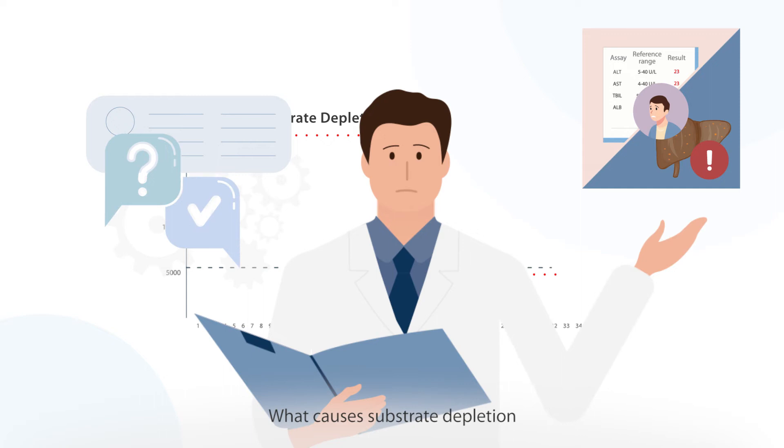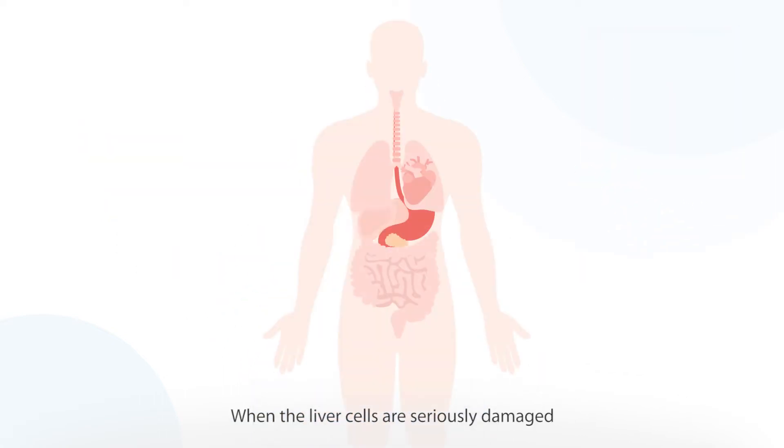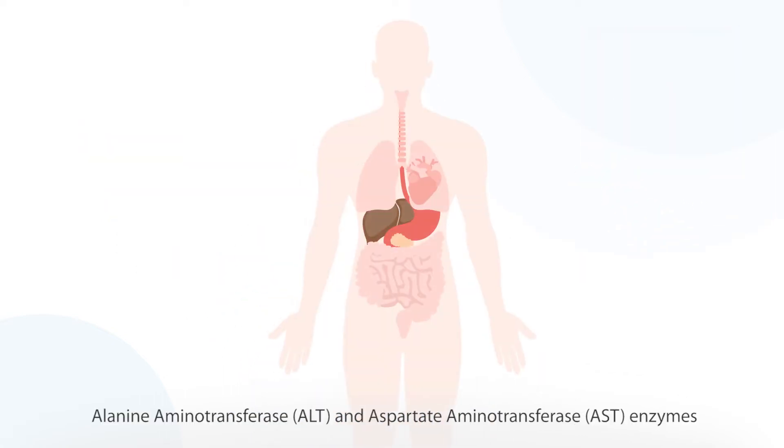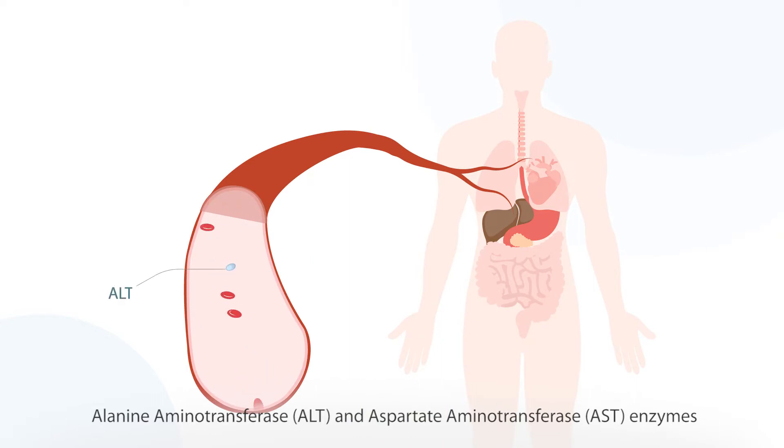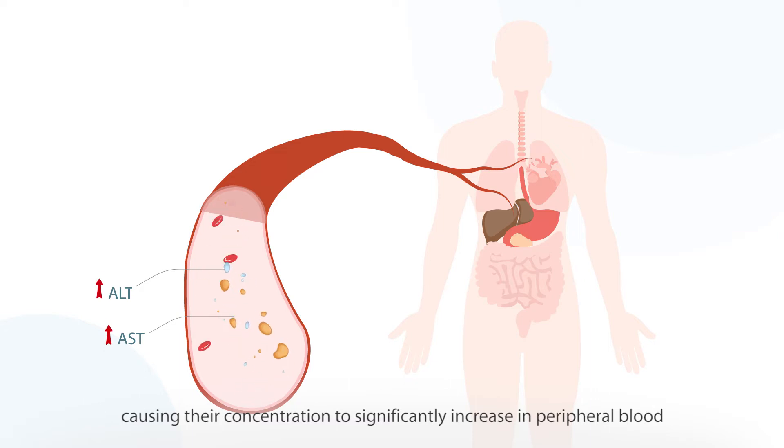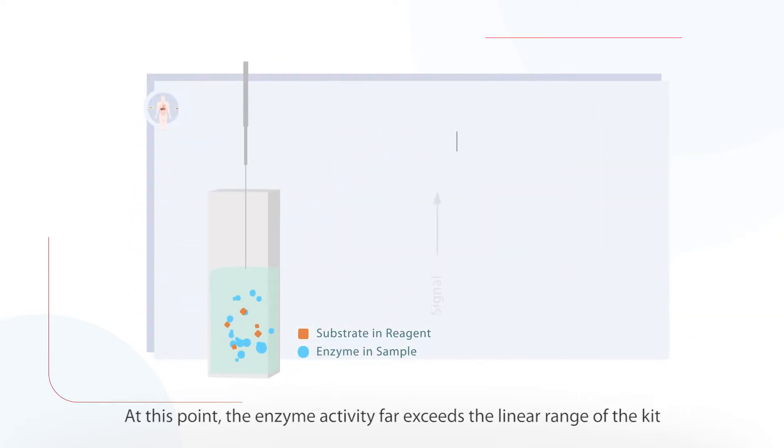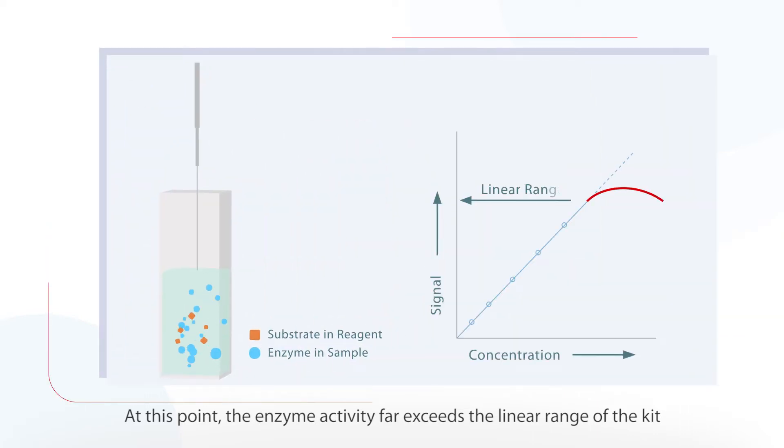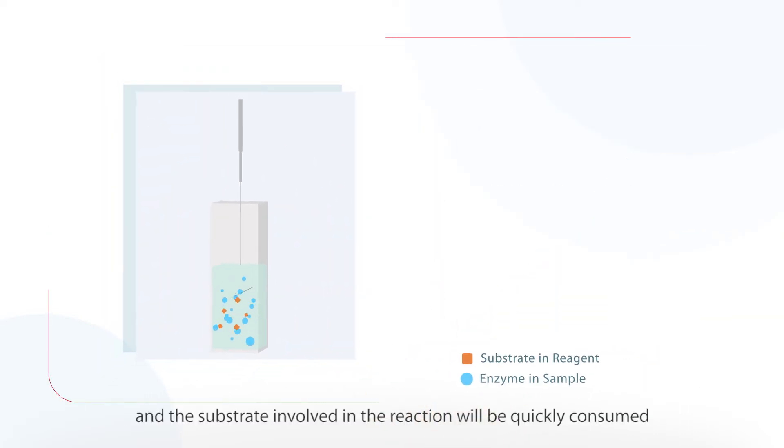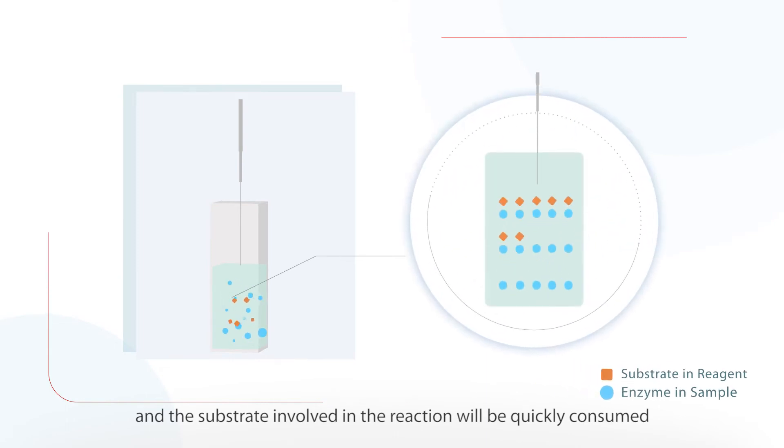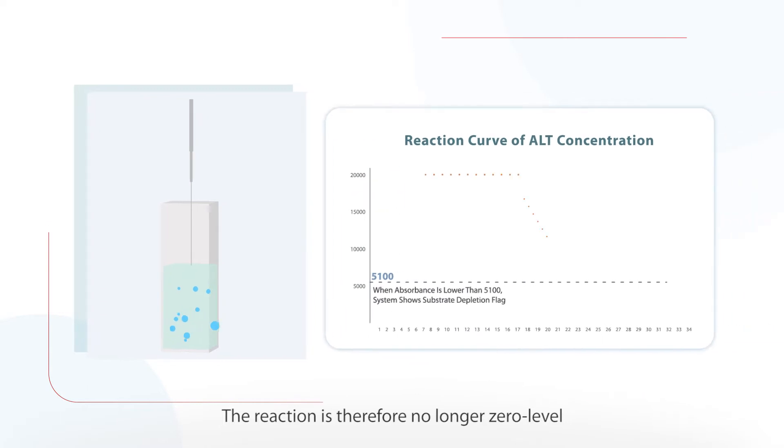What causes substrate depletion? When the liver cells are seriously damaged, alanine aminotransferase and aspartate aminotransferase enzymes are released in large quantities, causing their concentration to significantly increase in peripheral blood. At this point, the enzyme activity far exceeds the linear range of the kit, and the substrate involved in the reaction will be quickly consumed. The reaction is therefore no longer zero level.